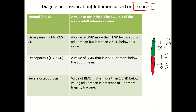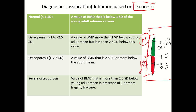Coming to diagnostic classification, this is based on the T-score. The T-score is taken from the bone mineral density score, identified by DEXA scan, which will be covered in future slides. Look at the arrow — green color suggests it is normal and healthy, whereas red color suggests it is abnormal and may be osteopenic or osteoporotic. If the T-score is above minus one, that means it is normal and healthy.